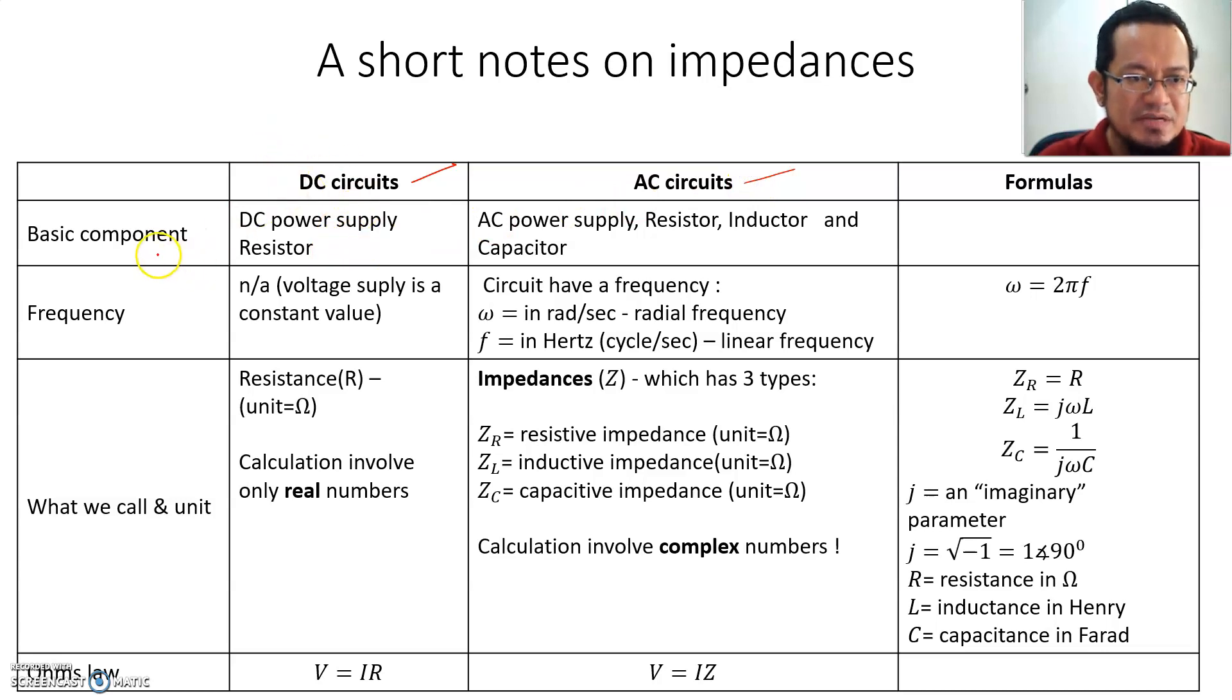As you can see, there's a difference between DC circuit and AC circuit. The basic component for DC circuit: you have a DC power supply and resistor. But for AC circuit you have a power supply, you have a resistor, but in addition to that you will maybe have some inductor and capacitor. In terms of frequency, for DC circuit there's no frequency since the voltage and current supply are constant value. But in an AC circuit, AC stands for alternating current, you will have voltage and current and impedance will depend on the value of the frequency. The frequency is divided into two: omega, radial frequency with unit radian per second, and linear frequency f measured in hertz or cycle per second.